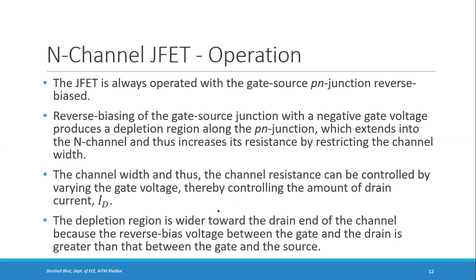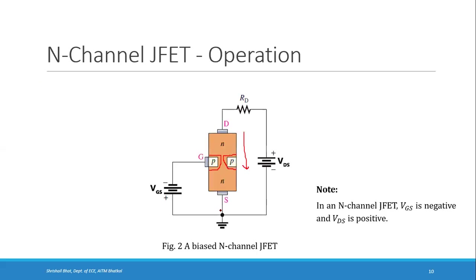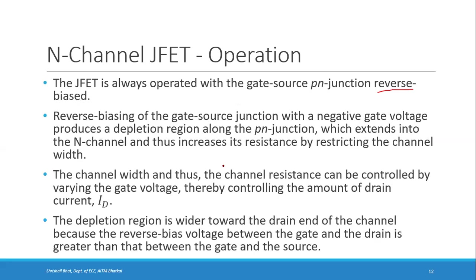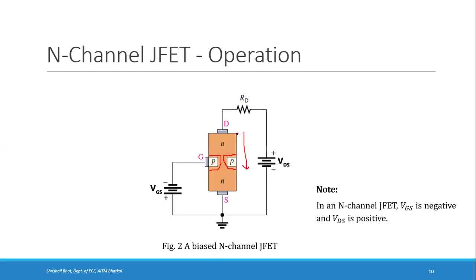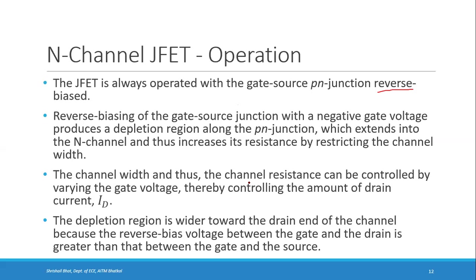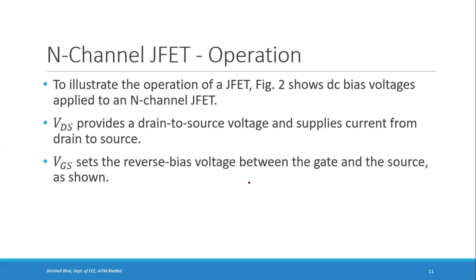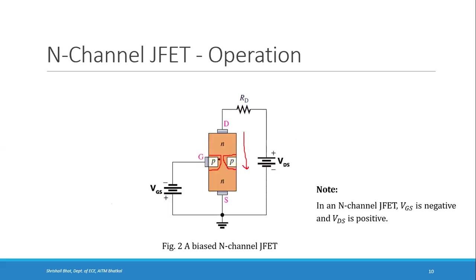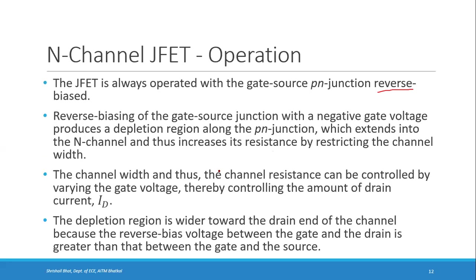JFET is always operated with the gate-source PN junction reverse biased. The reverse bias produces a depletion region along the PN junction which extends into the channel and increases its resistance by restricting the channel width. The channel width, and thus the channel resistance, can be controlled by varying the gate voltage, thereby controlling the drain current ID. The depletion region is wider towards the drain end because the reverse bias between gate and drain is greater than between gate and source.